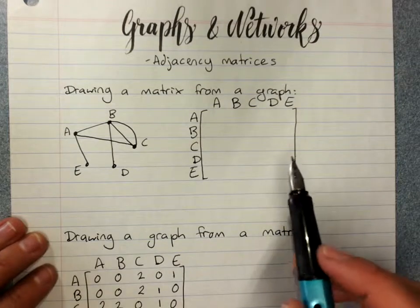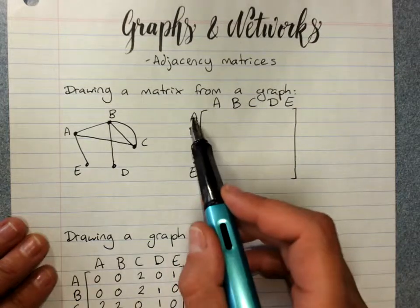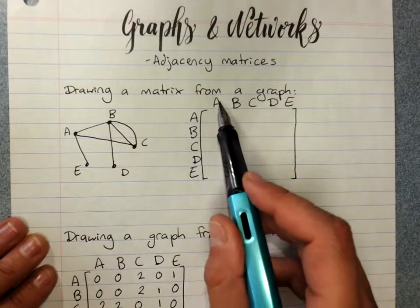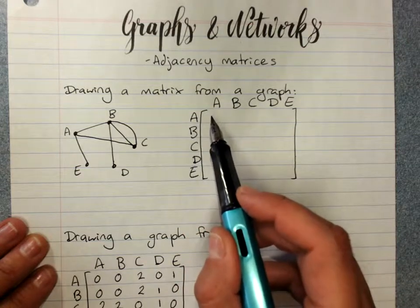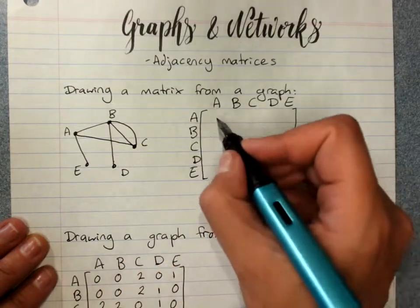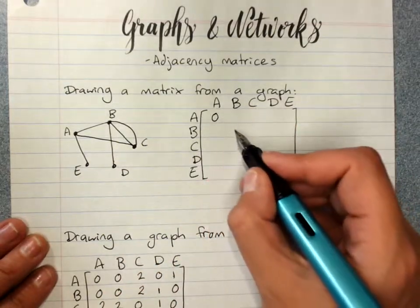Now, quite obviously, the leading diagonal, if you remember that terminology, connecting A to A, we're only going to have something in there apart from zero if we have a loop. There's no loops here. That was very silly of me. So my leading diagonal,